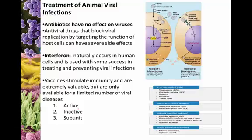We also see subunit vaccines, which are basically pieces of viruses chopped up — you only get some of the capsid components or some of the spikes. All of these are there to train your immune system on how to deal with a virus.